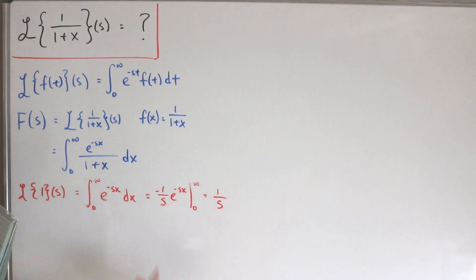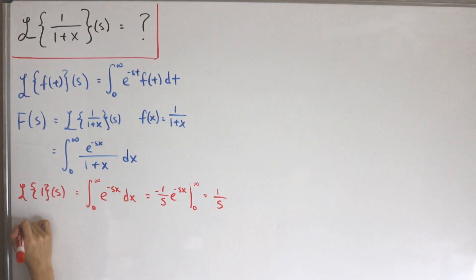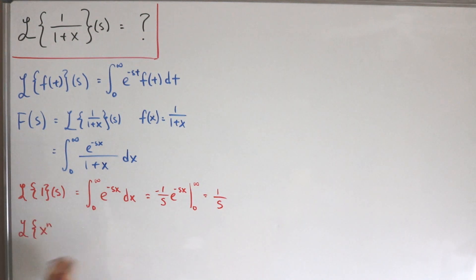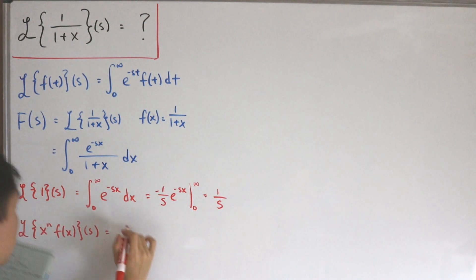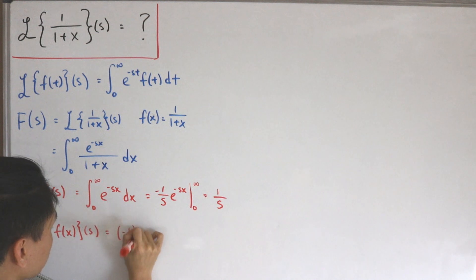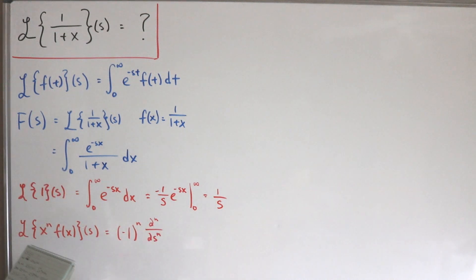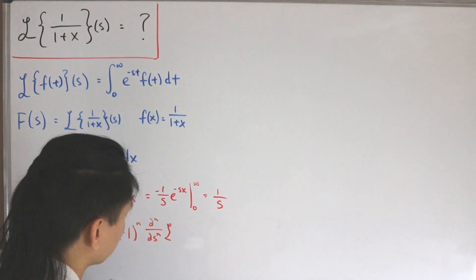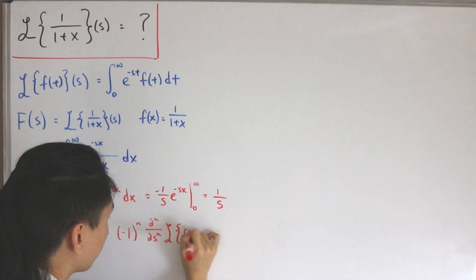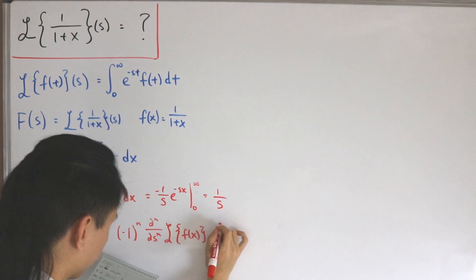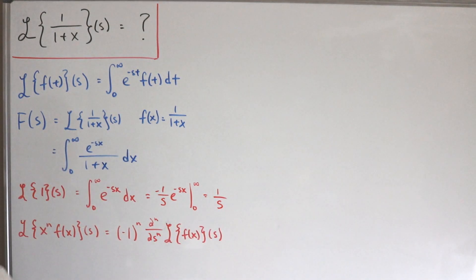The key property we'll be using is that the Laplace transform of x to the power n times f(x), with respect to s, equals negative one to the power n, multiplied by the nth derivative with respect to s of the Laplace transform of f(x) with respect to s. In other words: L{x^n f(x)} = (-1)^n · d^n/ds^n [F(s)].